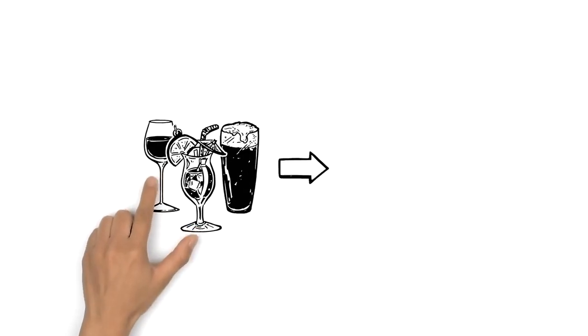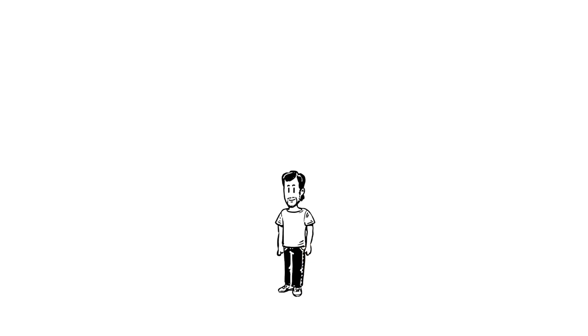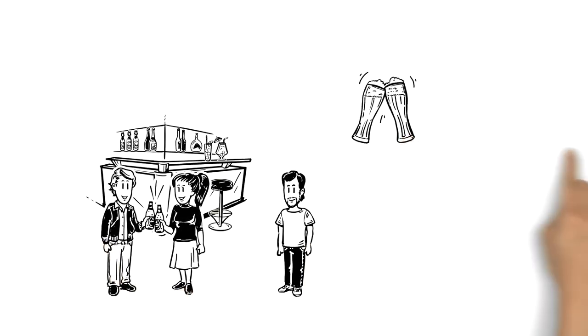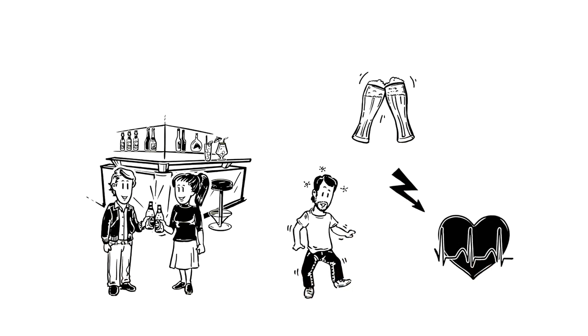We explained what alcohol does to your body. This is Michael. He enjoys going out and drinking at the weekend, sometimes a bit more than he should. He's worried that it might be affecting his health. What exactly is alcohol doing to him?